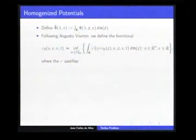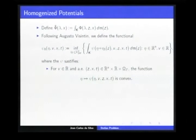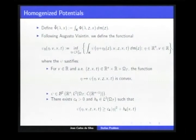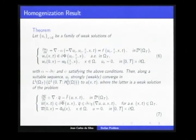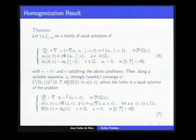Here we have homogenization potentials. We define this functional that was introduced by Vicentino in the periodic case. The function psi satisfies some conditions: first, it must be convex; it must satisfy a regularity condition; and it must be bounded below by a quadratic function. With these conditions, we have the following theorem. Let epsilon be a family of weak solutions of this problem, where our monotonous operator is a subdifferential of the convex function psi.